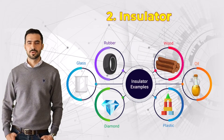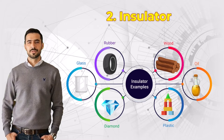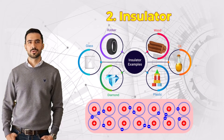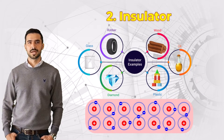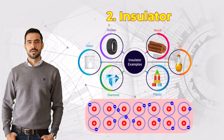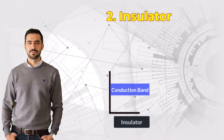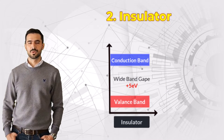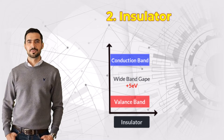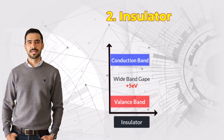Next, let's talk about insulators. These materials resist the flow of electric current because their electrons are tightly bound to their atoms. In terms of energy levels, there's a large gap between the valence band and the conduction band, so electrons can't move freely.